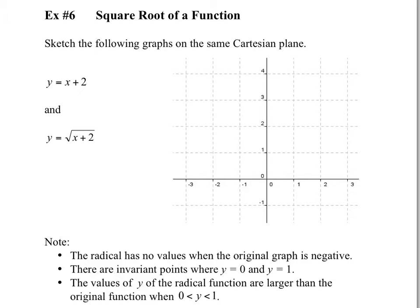So it's saying sketch the following graphs on the same Cartesian plane. We've got two graphs here we need to sketch. We need y equals x plus 2. This is just a line — a linear function with a slope of 1 over 1 and a y-intercept of 2. So if I want to sketch that graph, it would pass by this point with a slope of 1.